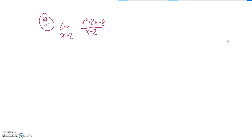So notice if I just try and plug 2 in, I get 2 squared plus 2 times 2 minus 8 over 2 minus 2. I'm trying to divide by 0, so I can't just evaluate this limit straight on.